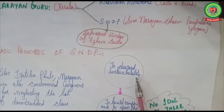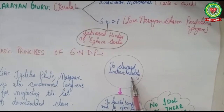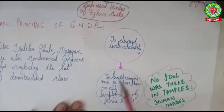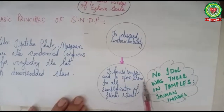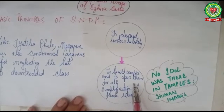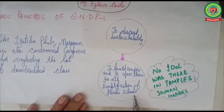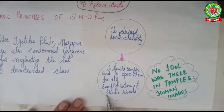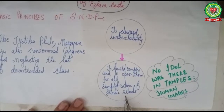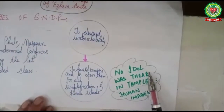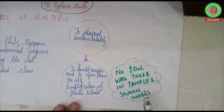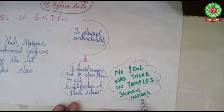The basic principles of his SNDP were: he discarded untouchability, saying all human beings are born equal and gods make no discrimination amongst them, so human beings also should not discriminate on the basis of caste. He built temples and opened them for all sections of society. He simplified Hindu rituals, saying the shastras and mantras were inventions of pandits to hold monopoly. Importantly, his temples had no idols — instead, images of human beings were installed.